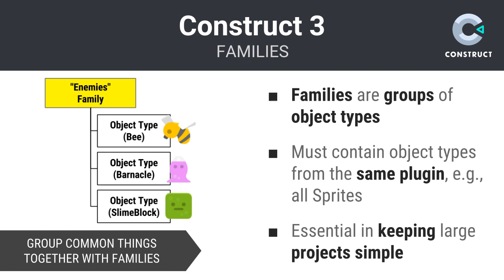You will find it useful to group the object types you define into what are called families. Families are essentially groups of object types that have something in common. One caveat to keep in mind is that members of a family must be of the same plugin type — for example, they must all be sprites. In this example, I've created a family named Enemies and included within it three sprite object types, which I define to be my enemies within my game project.